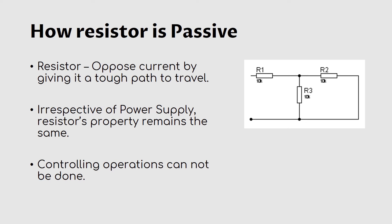But in case of a resistor, see this simple circuit of three resistors. The property of a resistor is that it opposes the current by giving it a tough path to flow. Irrespective of the power supply, the resistor's core property remains the same — it will still oppose the current.